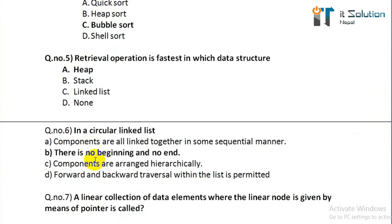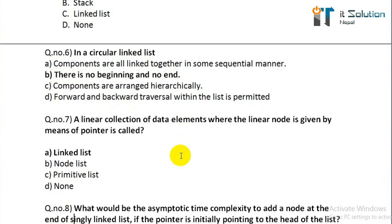Question number six: in a circular linked list, its correct answer is option B — there is no beginning and no end in a circular linked list. Question number seven: a linear collection of data elements where the linear node is given by means of a pointer is called? Its correct answer is option A, linked list.